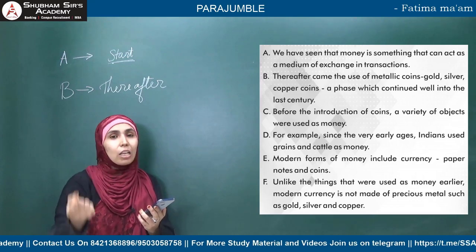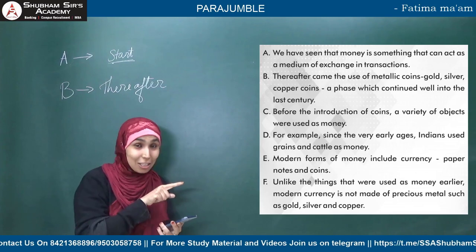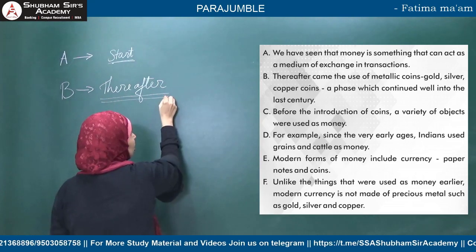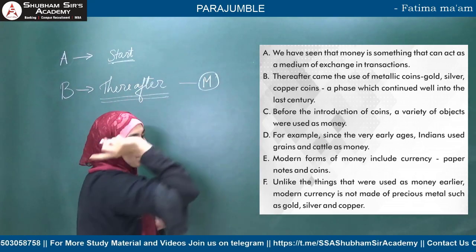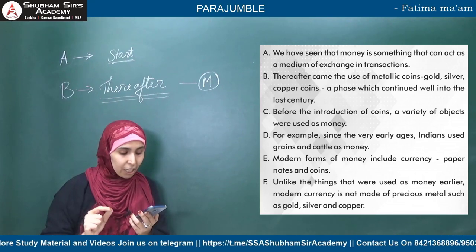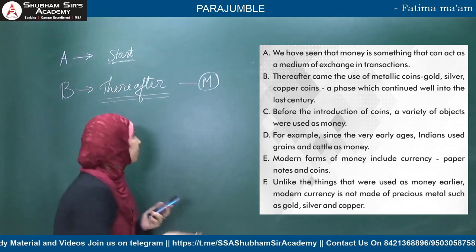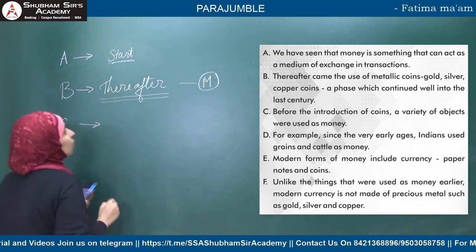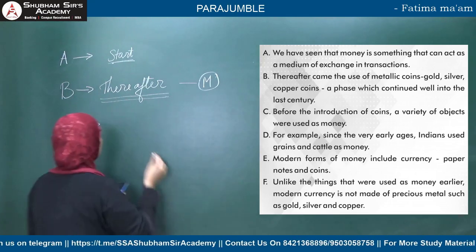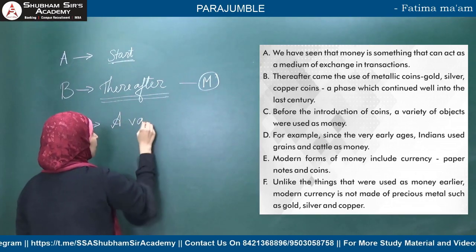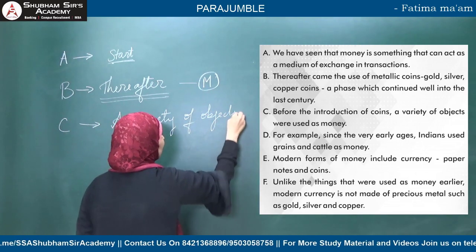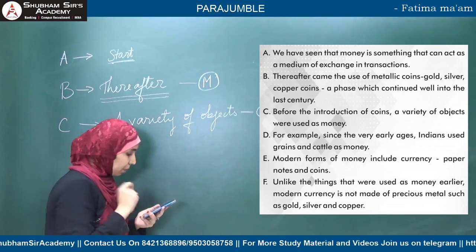Before the metallic coins came, some other thing must have been used. Statement C: 'Before the introduction of coins, a variety of objects were used as money.' The pointer here is 'a variety of objects' — before coins came, many things were used as money. This will also go in the middle.